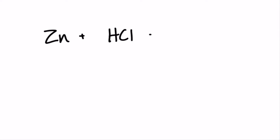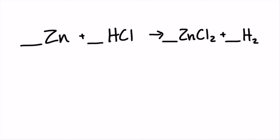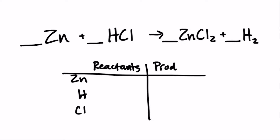Our first reaction starts off with zinc plus HCl yields ZnCl2 plus H2. Here's our unbalanced chemical reaction. We're going to write out how many of each element we have on either side of the reaction. Since nothing in the reactant side has a subscript, we have one of each. We have one zinc in the product, and since chlorine and hydrogen both have a two subscript, we know we have two atoms of each of those in the product.